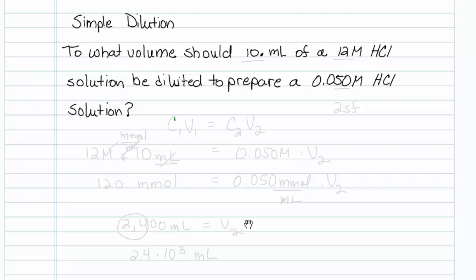The classic formula is C1V1 equals C2V2. So our initial concentration is 12 molar, our initial volume is 10 mls,